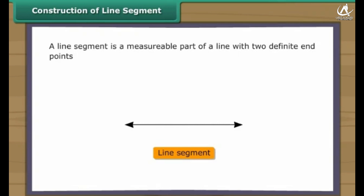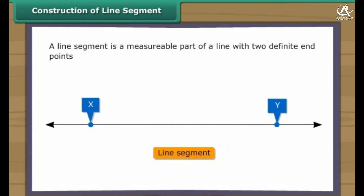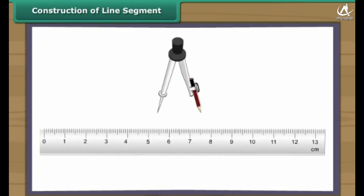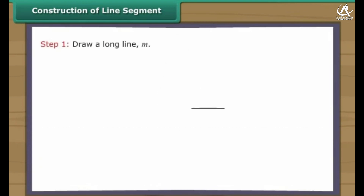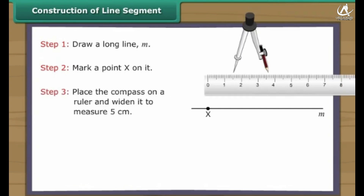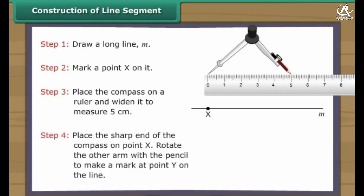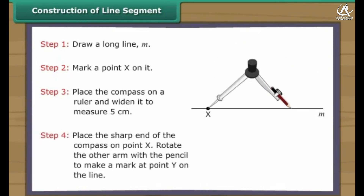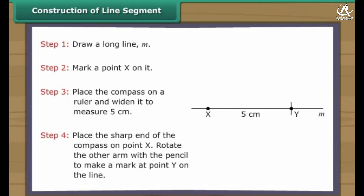Construction of line segment. A line segment is a measurable part of a line with two definite endpoints. We use a ruler and a compass to construct a line segment. Let us construct a line segment five centimeters long. Draw a long line M. Mark a point X on it. Place the compass on a ruler and widen it to measure five centimeters. Place the sharp end of the compass on point X. Rotate the other arm with the pencil to make a mark at point Y on the same line. We have a line segment XY which is five centimeters long.